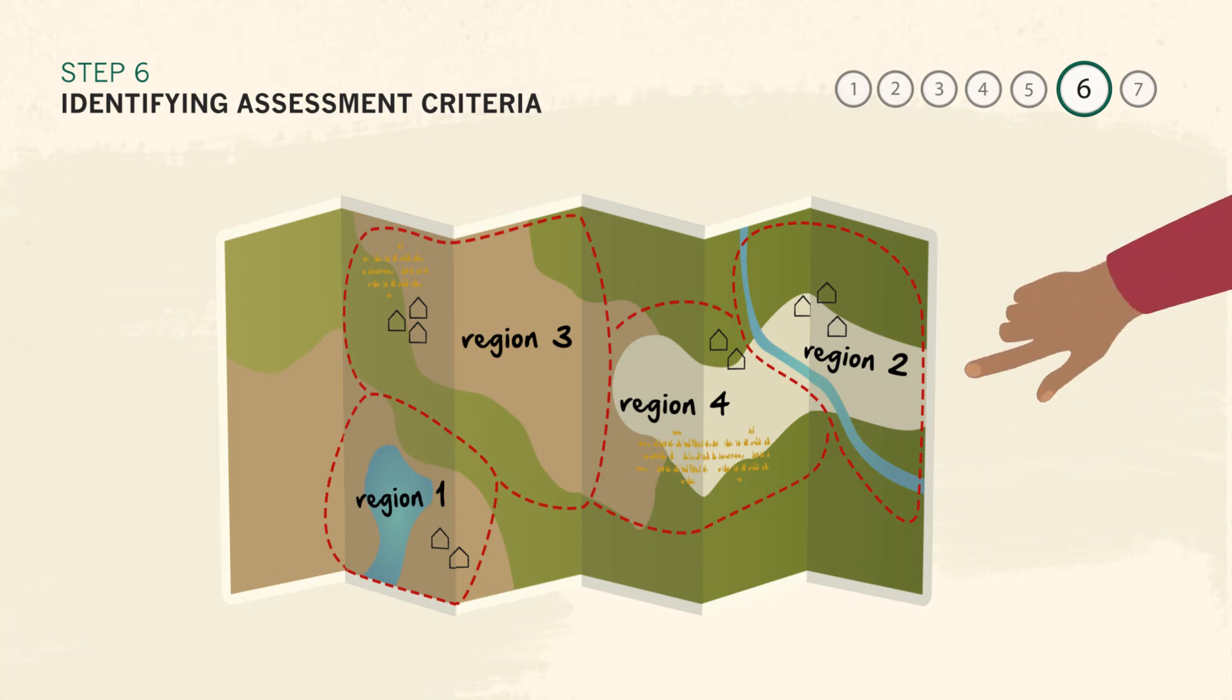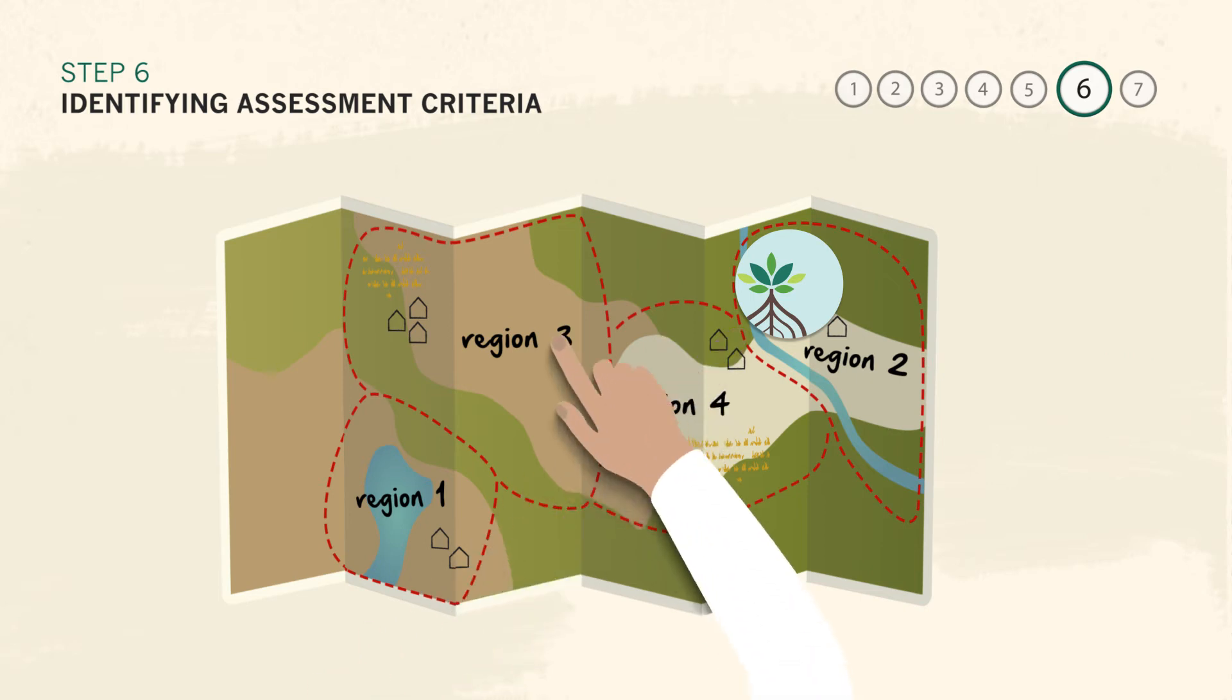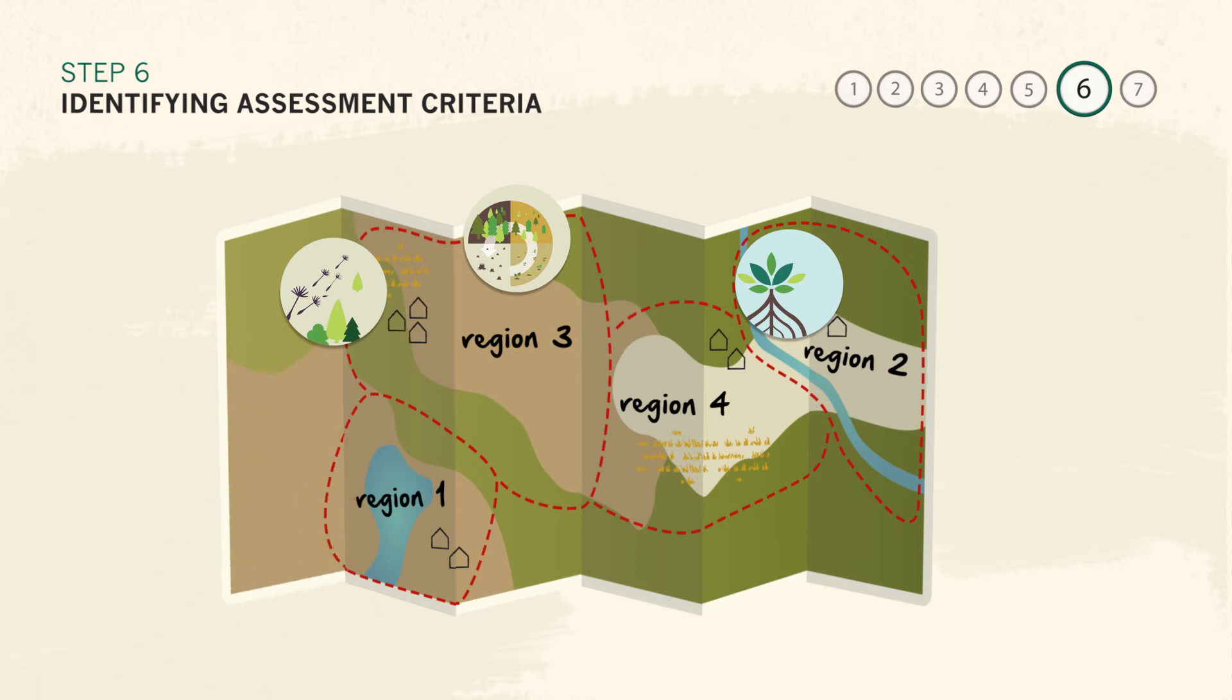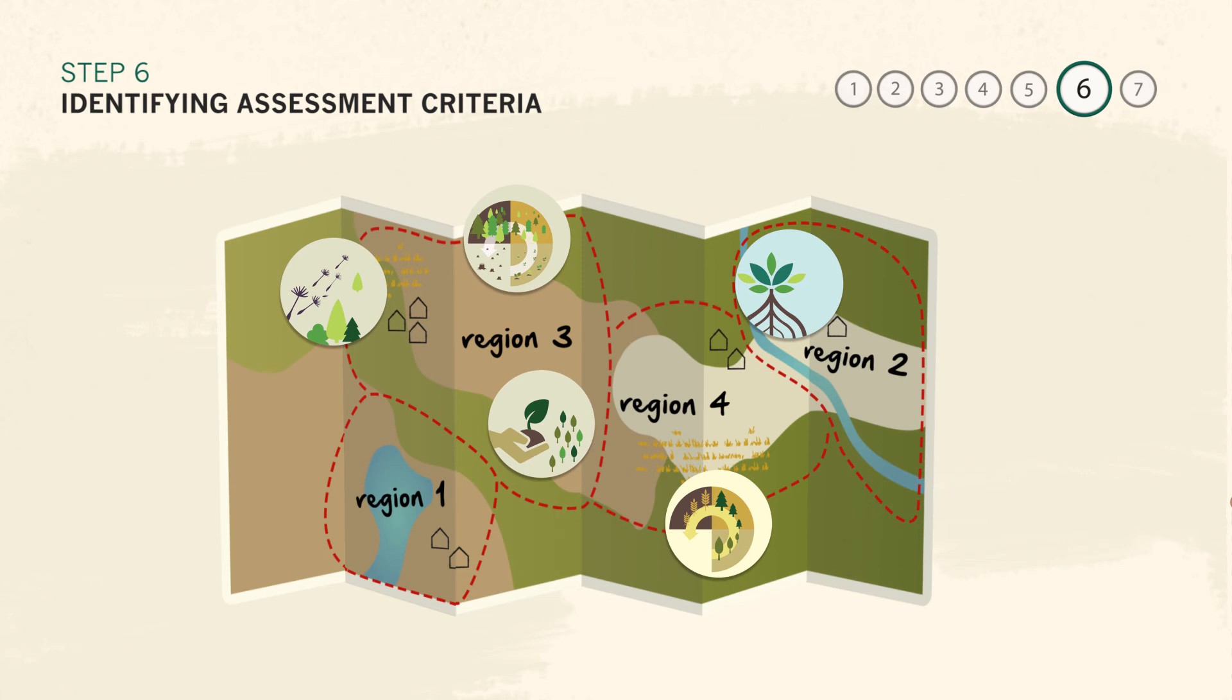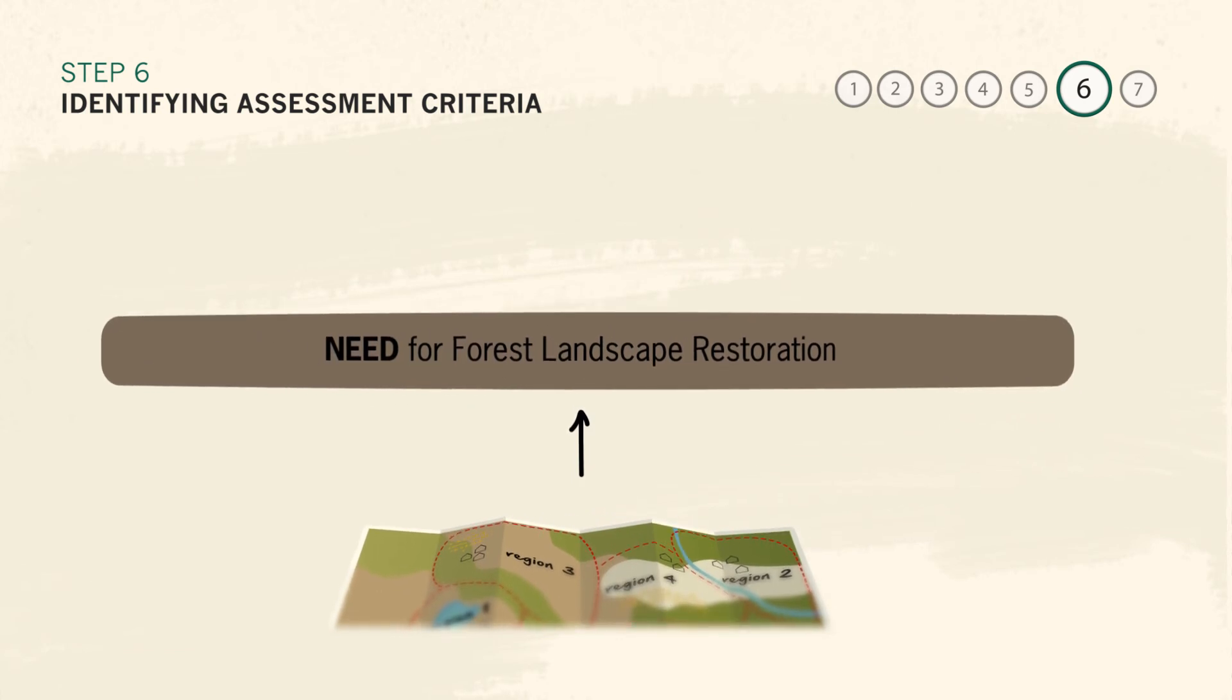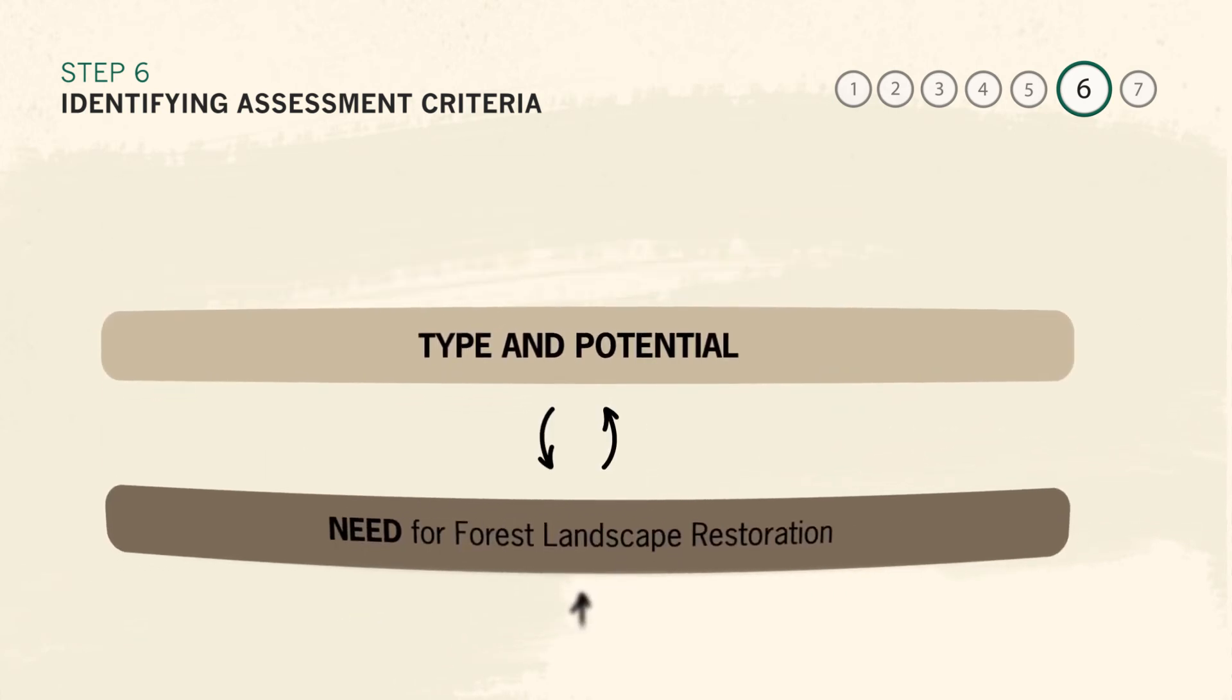With these options in hand, the assessment team can then guide stakeholders and experts to determine the criteria that will later be used to identify restoration potential in the assessment areas. These criteria will be the core of the assessment and will determine which land in the region is selected for offering the best restoration opportunities. Some example criteria for evaluating restoration opportunity include: How is the land degraded and what are the options for restoring it?